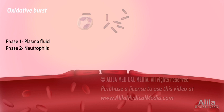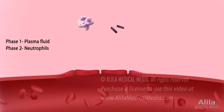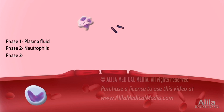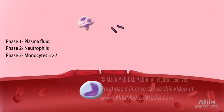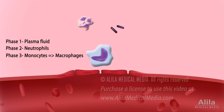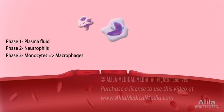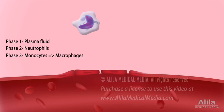The pathogen-laden neutrophils then die via apoptosis. In the third phase arrive monocytes. Monocytes differentiate into macrophages, which then remove pathogens, injured cells, and dying neutrophils by phagocytosis.